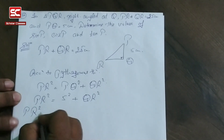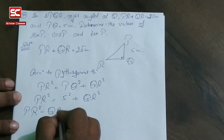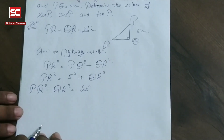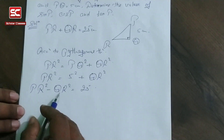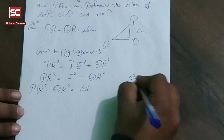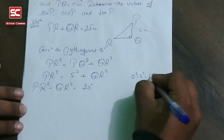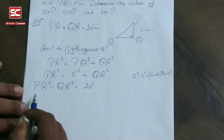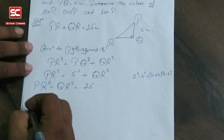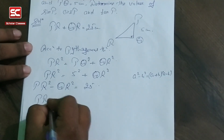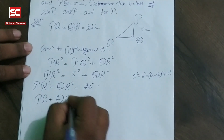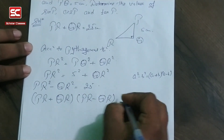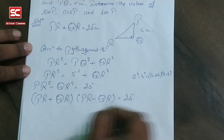PR square minus QR square is equal to 25. We know that A square minus B square is equal to A plus B times A minus B. Here, PR square minus QR square equals PR plus QR times PR minus QR, which equals 25.